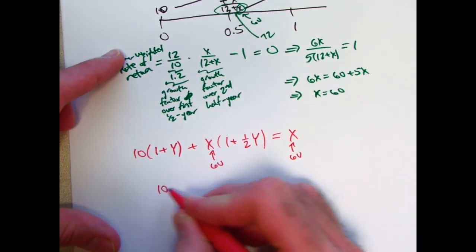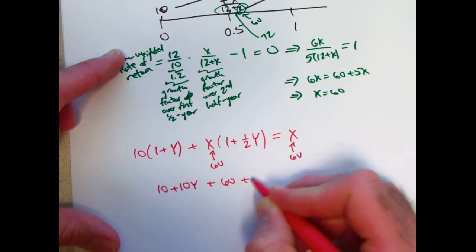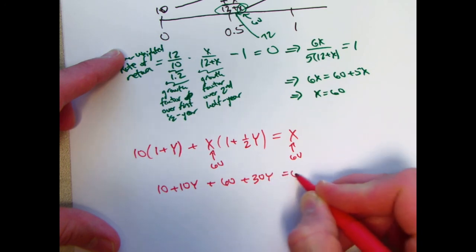So this can now be simplified pretty easily and solved for y very quickly, and we'd be done. Multiply the 10 through, we get 10 plus 10y. Multiply the 60 through, we get plus 60 plus 30y. And we have a 60 here.